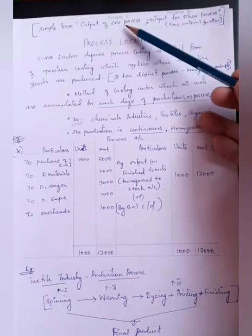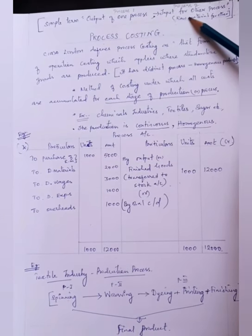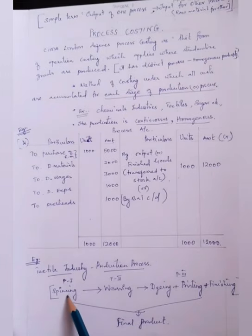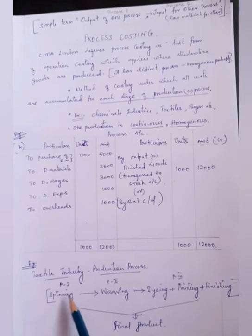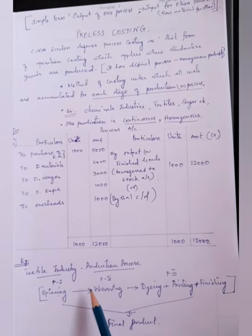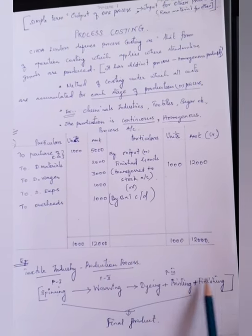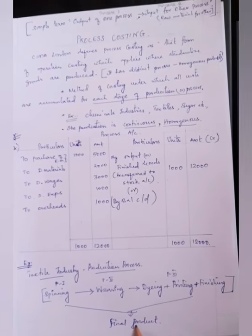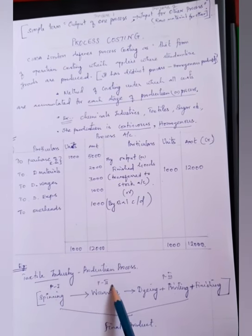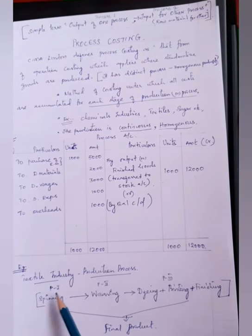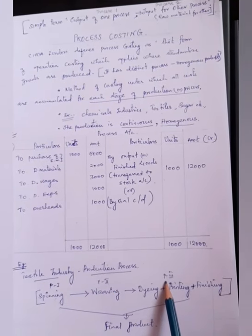In simple terms, process costing means the output of one process will be the raw material — the input — for the other process. For example, first we convert the raw material cotton into yarn, then we spin it, and the output of spinning will be the input for weaving, then the input for dyeing, printing and finishing, until it is converted into a finished product. Each stage is called process 1, process 2, process 3, and so on. The cost of process 1 is accumulated to process 2, then accumulated to process 3.